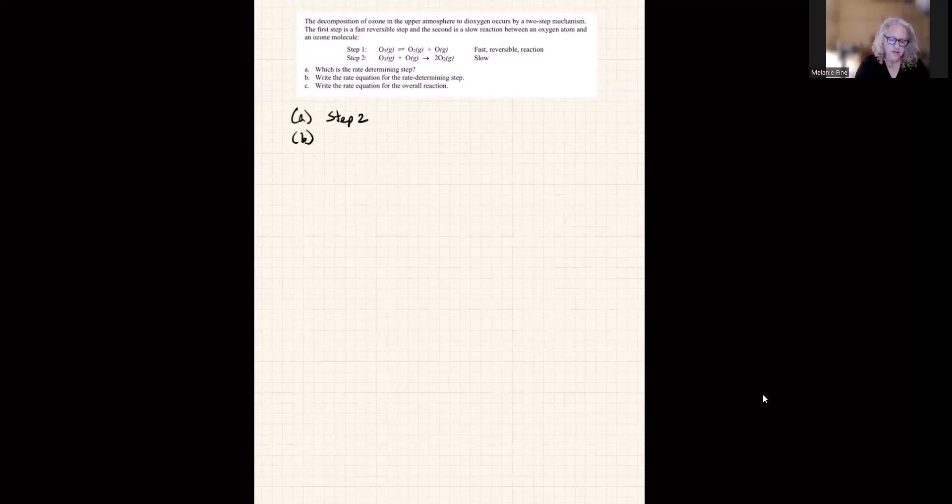Part B asks us, write the rate equation for the rate determining step. For that step, the rate is K times the concentration of ozone times the concentration of oxygen.